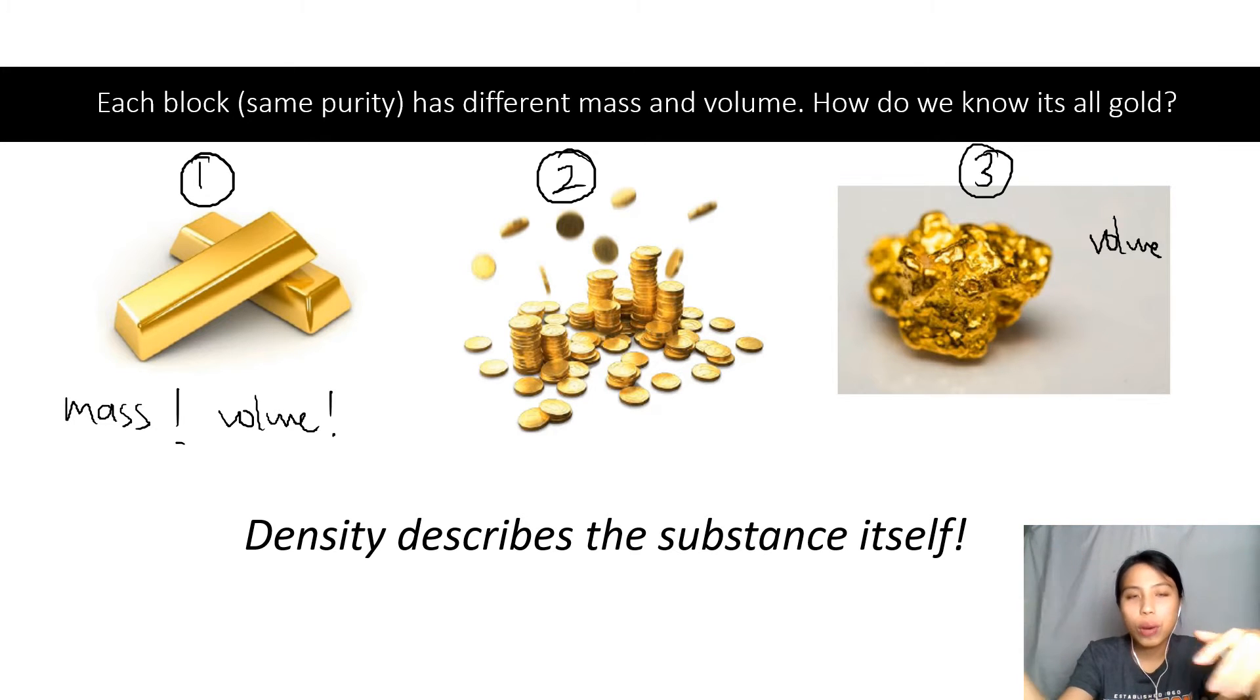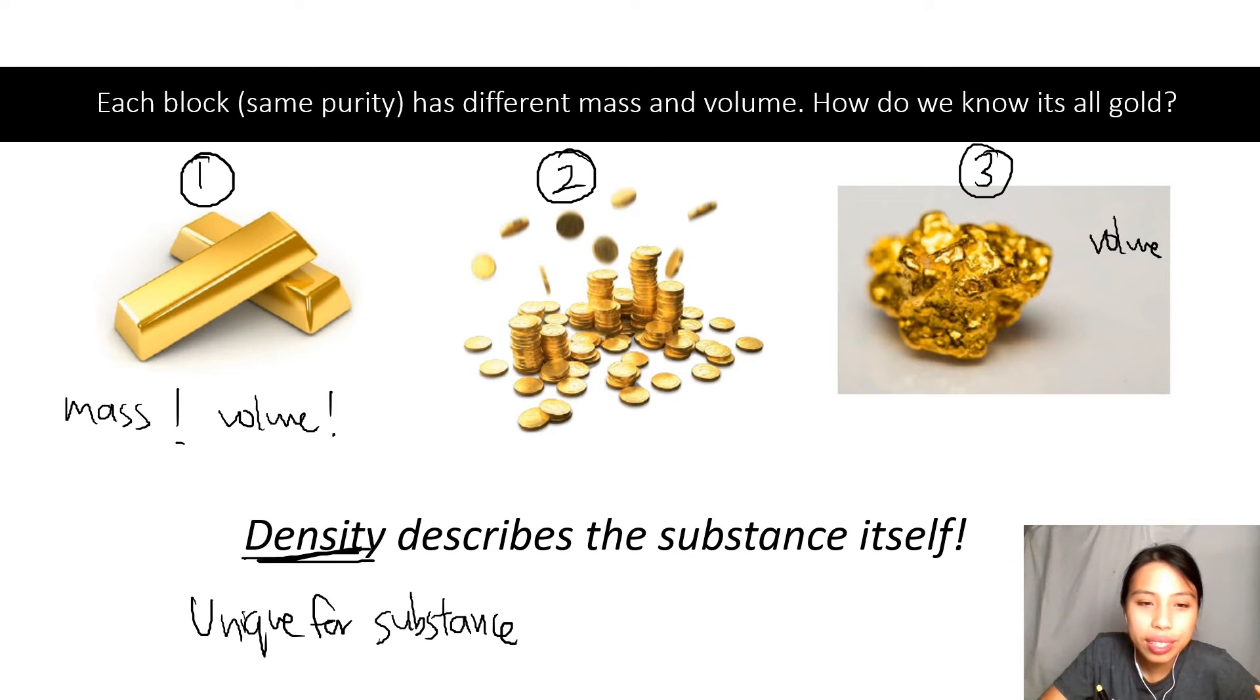If it's the same stuff it has the same density. Your water can be water on the floor, water in a container, water in your body, but still water - it will have the same density. So in this case, density of gold is the same no matter what shape or what size it is. This is what's special about density - it's unique for that substance.